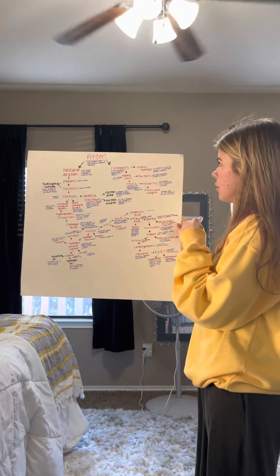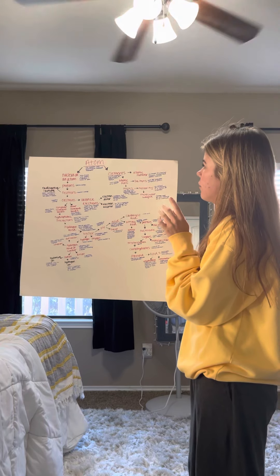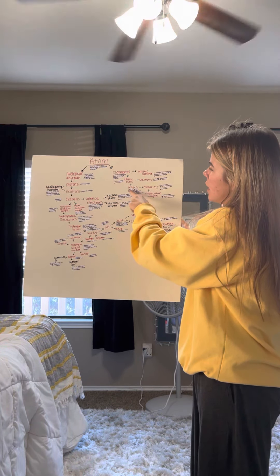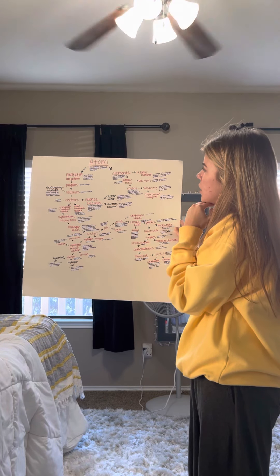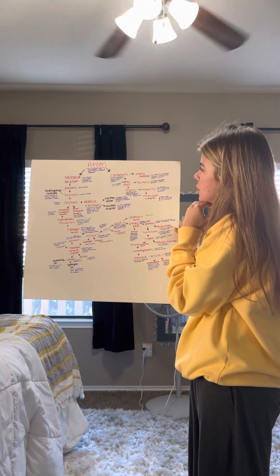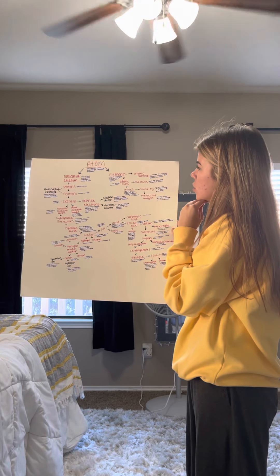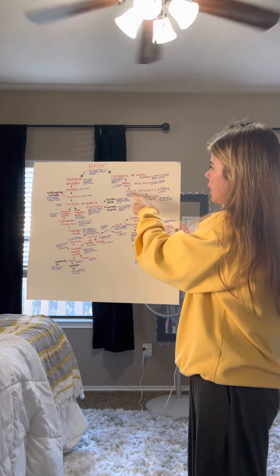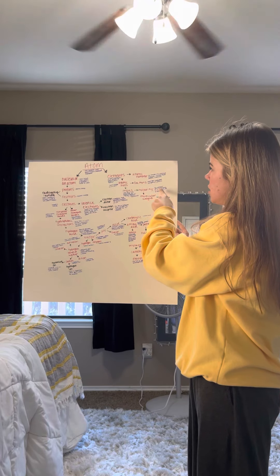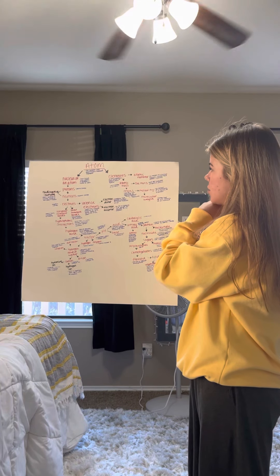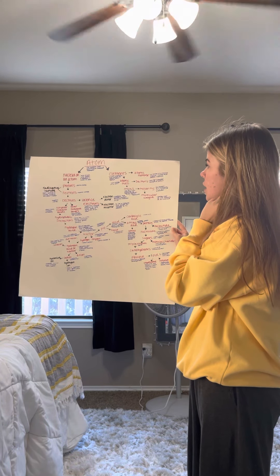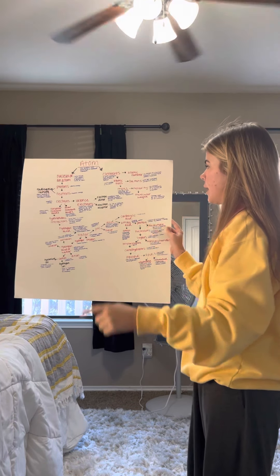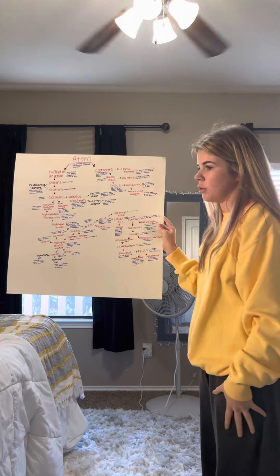Going to the right, we have daltons, which are a unit for molecular weight of proteins. And then going down, we have moles, which are a unit for measuring large quantities of small particles — atoms or molecules, etc. Then to the right, we have molarity, which is the amount of a substance in a volume of solution. And then going down, we have molecular weight, which is the average mass of one molecule of an element.